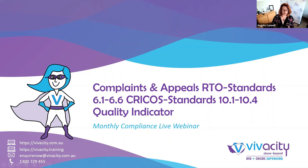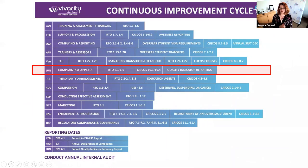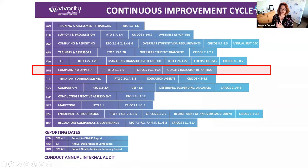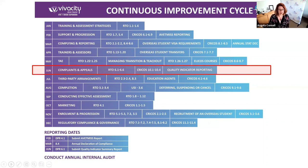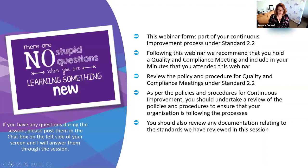Today we're also going to have a focus on quality indicators, because the report is due at the end of this month. There are a few changes this year due to COVID in 2020. We're going to be going through the standards for complaints and appeals for both RTO and CRICOS, and quality indicators. You need to submit your quality indicator report at the end of this month.